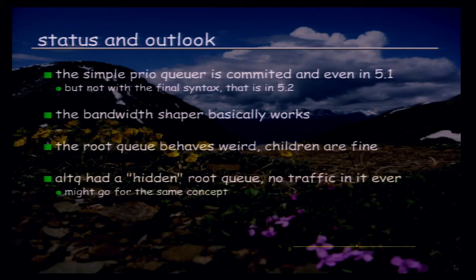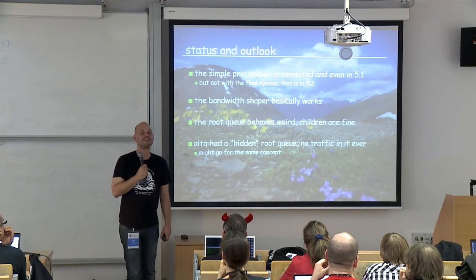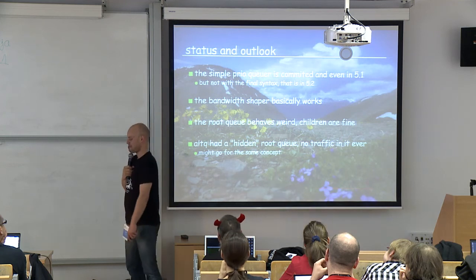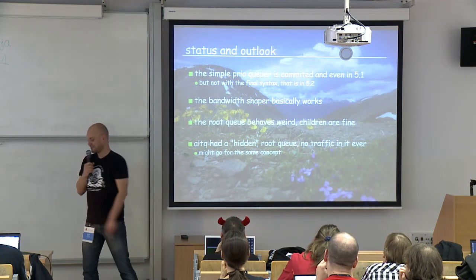Status and outlook. The simple priority queue is committed — it was even in 5.1 but the syntax wasn't final. The syntax in 5.2, about to be released any day, has the final syntax — final for the next five years. The bandwidth shaper basically works on this laptop. I invented cloud computing: after losing a diff by being stupid, I started doing SMTP backups — CVS diff piped into mail, sent to a random developer with subject 'you are backup.' It works perfectly fine. This is cloud computing.